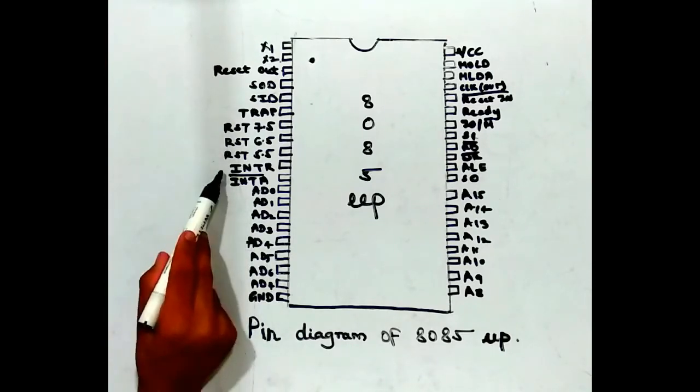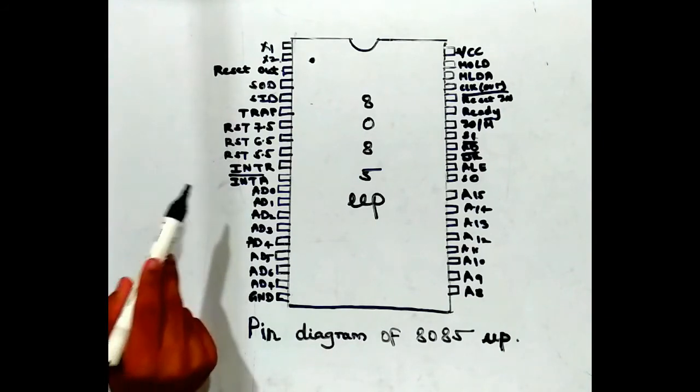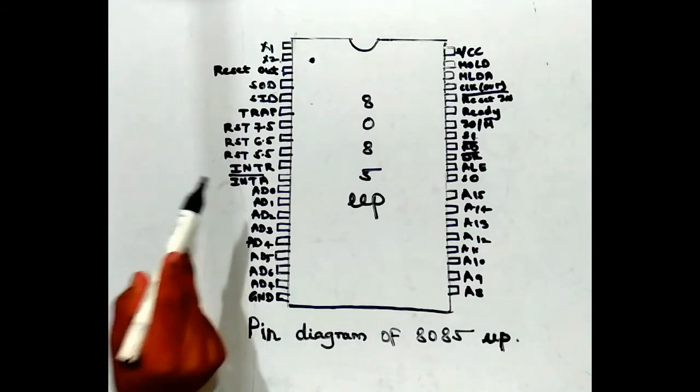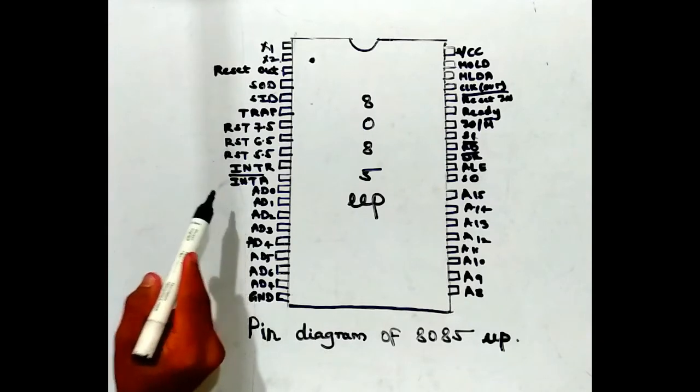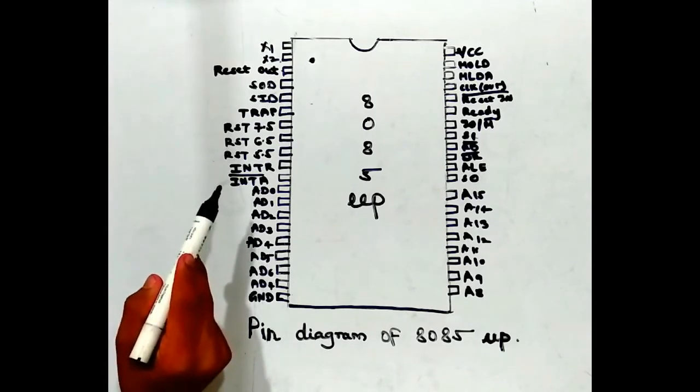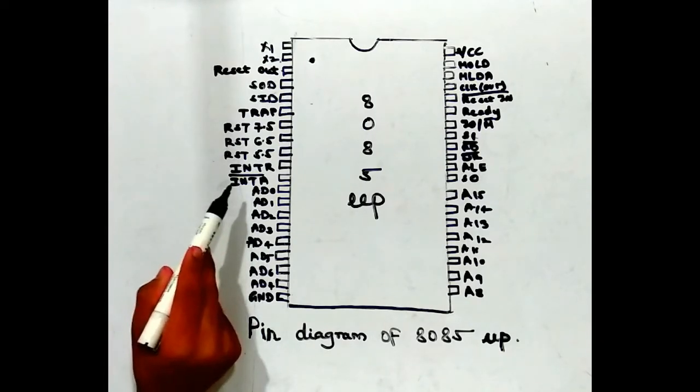The tenth and eleventh pins are INTR and INTA bar. INTR is an active high, level-triggered, general-purpose hardware interrupt. When INTR occurs, the microprocessor generates INTA bar.